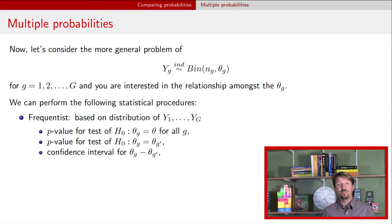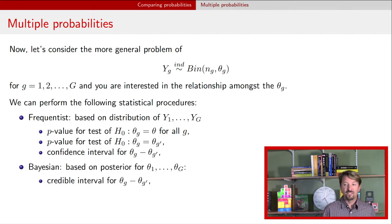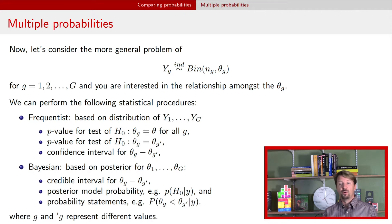You can also calculate confidence intervals for any differences that you're interested in. On a Bayesian side of things, you can have a posterior distribution for each of the individual parameters. You can calculate credible intervals for differences. You can calculate posterior model probabilities or posterior probabilities of comparisons between those parameters.